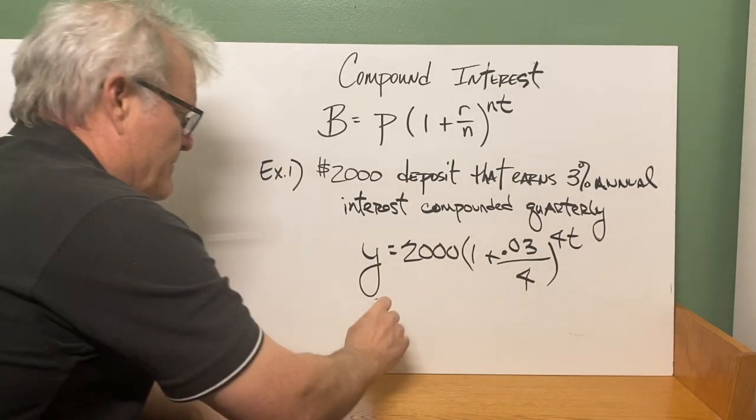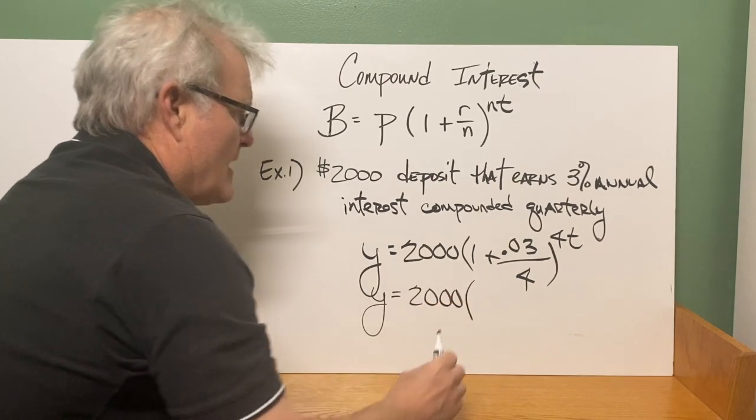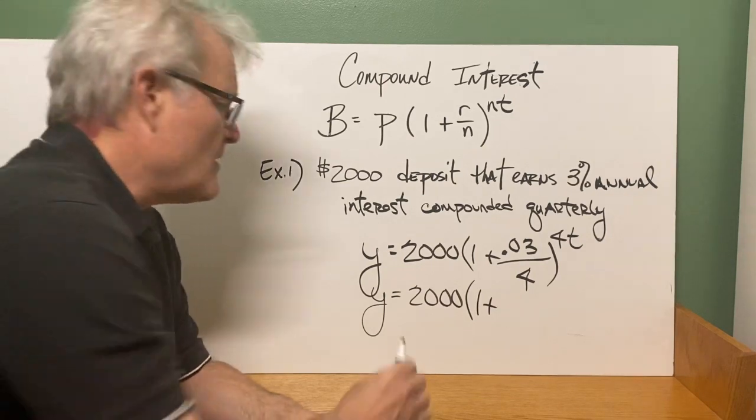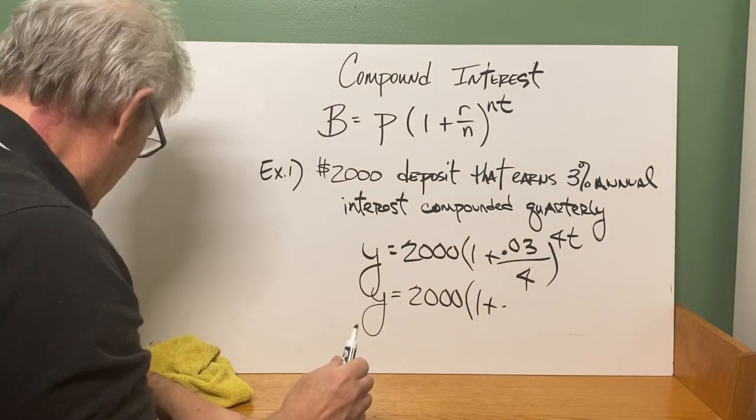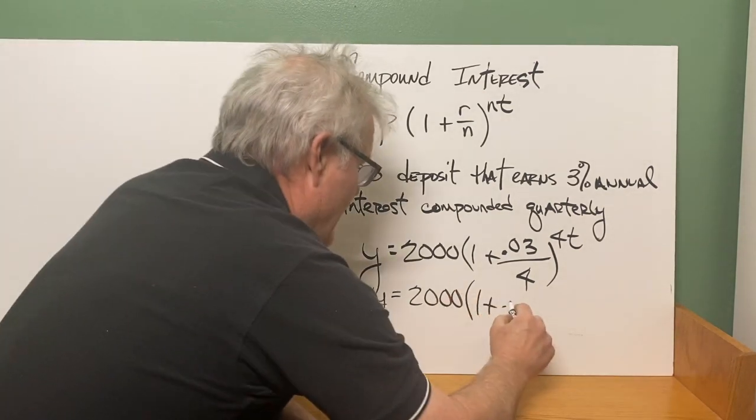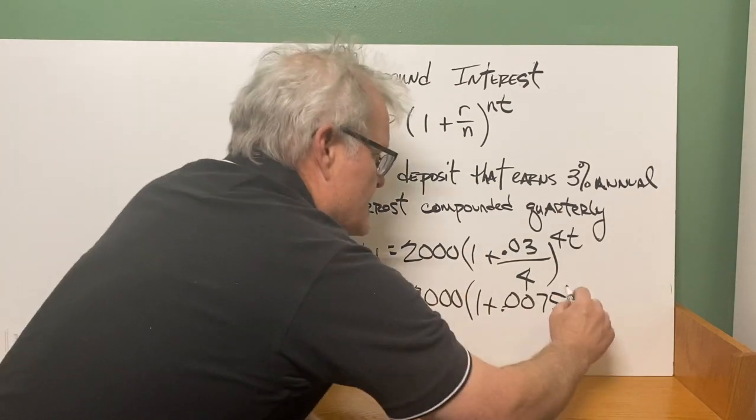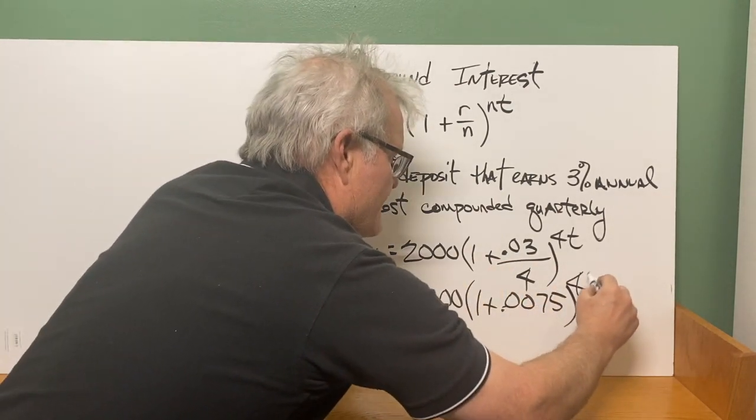So they would simplify this, or you guys would simplify this as Y equals 2,000 times. It's going to be one plus. Now 0.03 divided by four is 0.0075. 0.0075 is 0.03 divided by four. And we're going to raise that to the 4T.